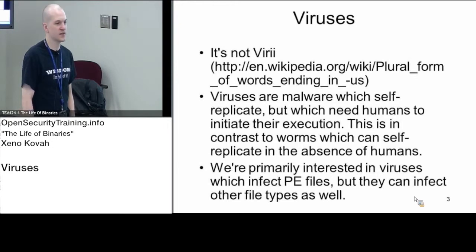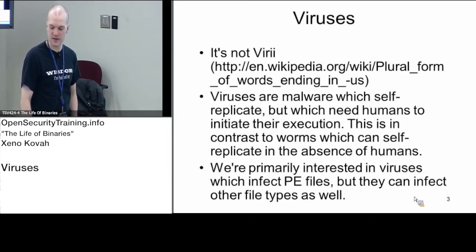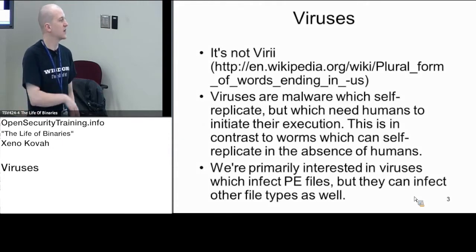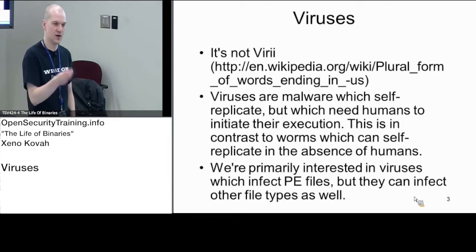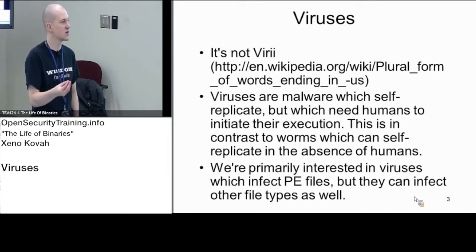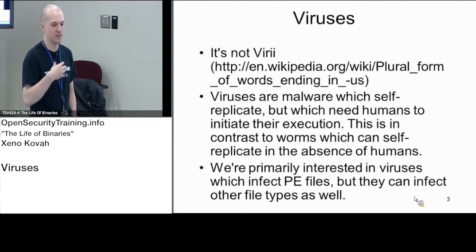Malware terms are always very squishy — what's a virus, what's a Trojan, what's a rootkit. But for my purpose, a virus is malware which self-replicates. Based on some taxonomy I read long ago, I make the difference between worm and virus in that a virus requires some human help to continue propagation, whereas a worm can just automatically keep running around.